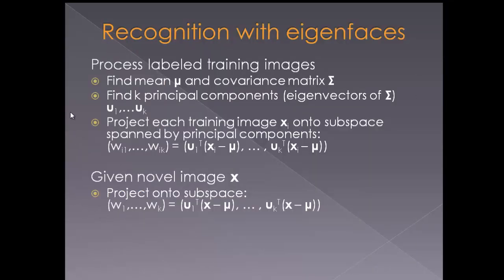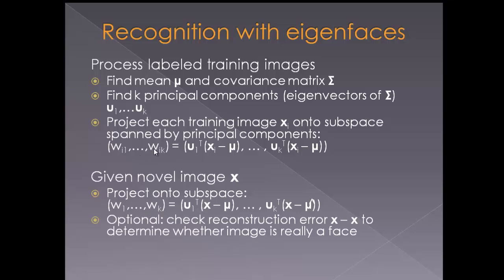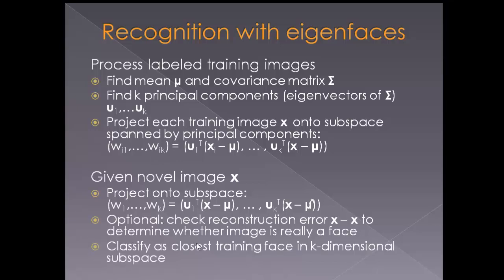For recognition using Eigenfaces, we first process the labeled training images by finding the mean and the covariance matrix, then computing the eigenvectors. We project each training image onto the subspace to derive all weight components for each image. When a new image comes in, we project it onto the principal component subspace, derive its weights, and find the minimum weight difference with stored images. The image is classified as the closest training face in the k-dimensional subspace.